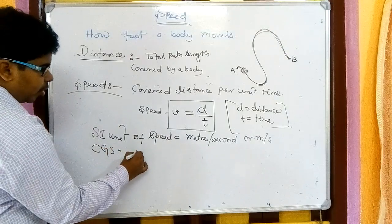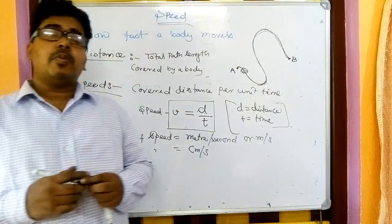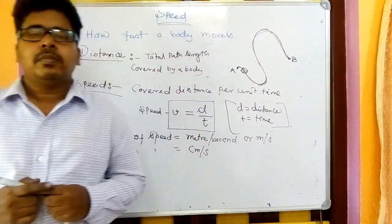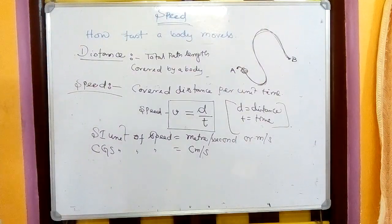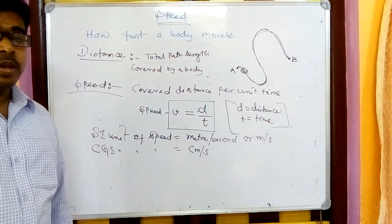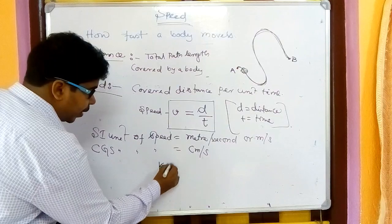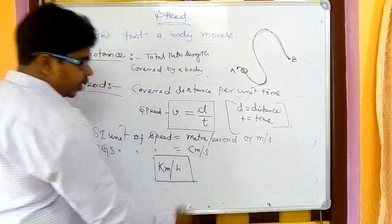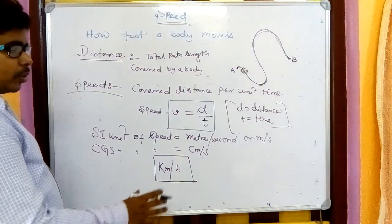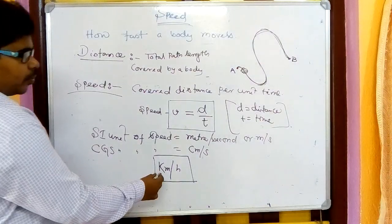The CGS unit of speed is centimeter per second. However, both meter per second and centimeter per second are too small for practical use. For practical purposes we use kilometer per hour, which is not an SI or CGS unit but is the unit we commonly use.